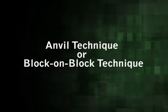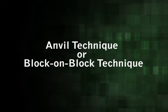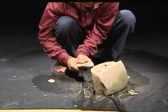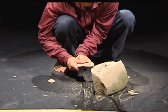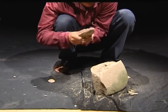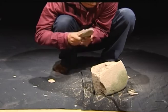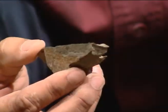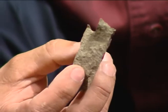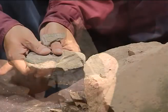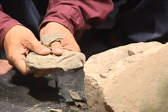Now let us come to the next point: anvil or block-on-block technique. In this technique, a lump of stone to be flaked is held in one or both hands and struck directly against a projected edge of a fixed, huge block of stone or anvil. This results in the detachment of a large, massive flake from the stone lump in hand, with a prominent bulb of percussion. Such large primary flakes could be used in making tools like some of the handaxes and cleavers.